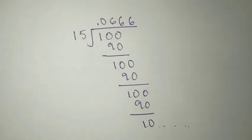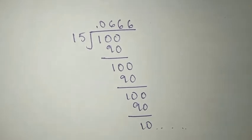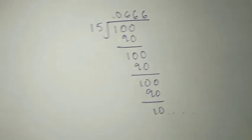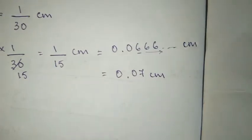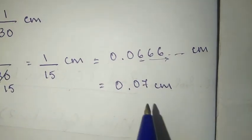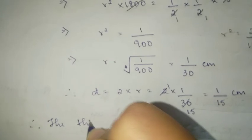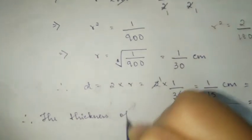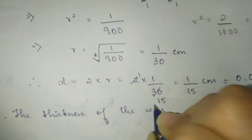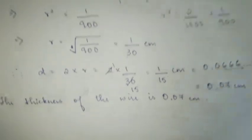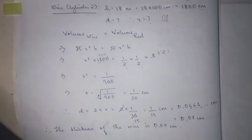1 divided by 15 gives 0.0666..., which rounds to 0.07 up to one decimal place. So finally, therefore the thickness of the wire is 0.07 centimeters. You can pause the video here if you want to copy it.